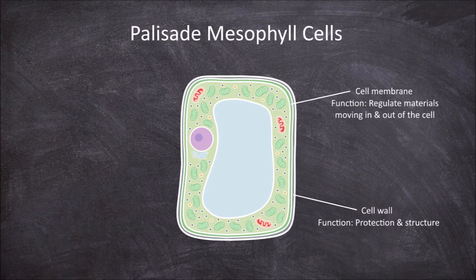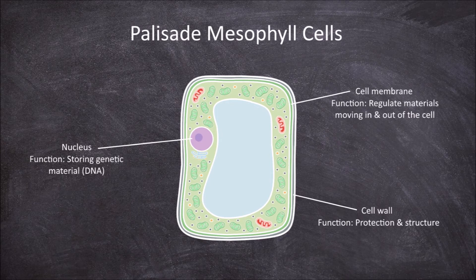Inside the cell there is the cytoplasm and the nucleus. The nucleus is a membrane-bound organelle. Its function is in storing the genetic material, the DNA of the cell. Within the cytoplasm there are a number of organelles surrounded in a liquid called the cytosol.